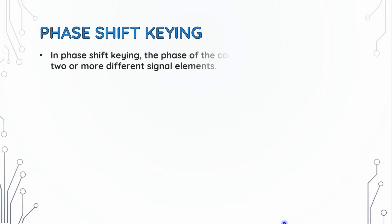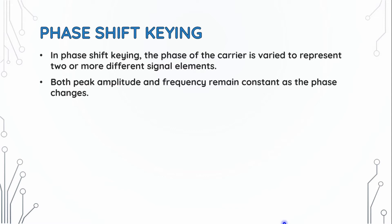In Phase Shift Keying, the phase of the carrier is varied to represent two or more different signal elements. PSK represents two different signal elements. Both peak amplitude and frequency remain constant as the phase changes — when the phase changes, the amplitude and frequency remain constant.